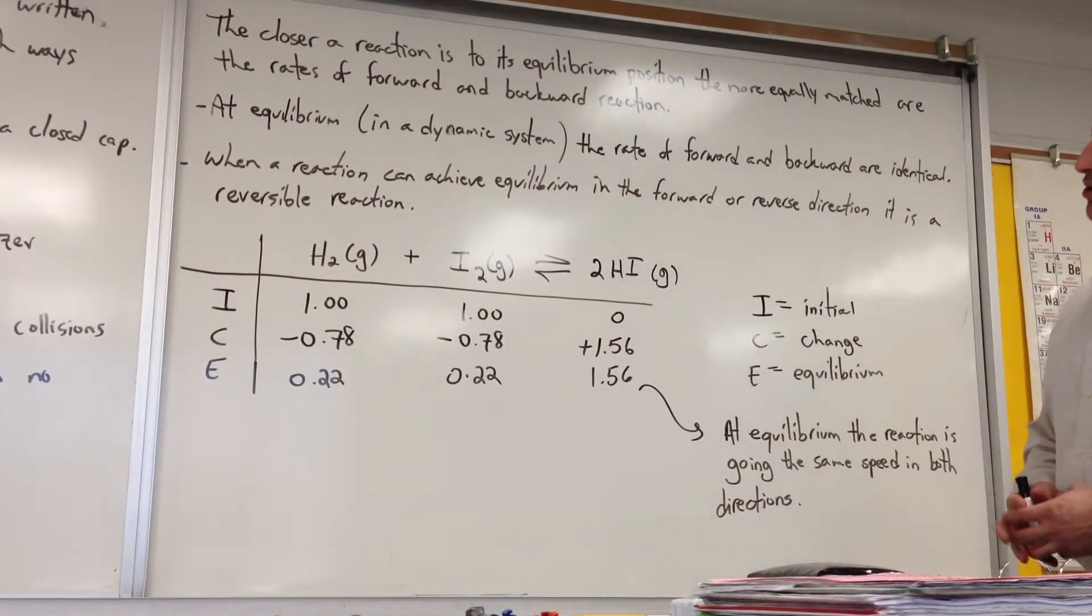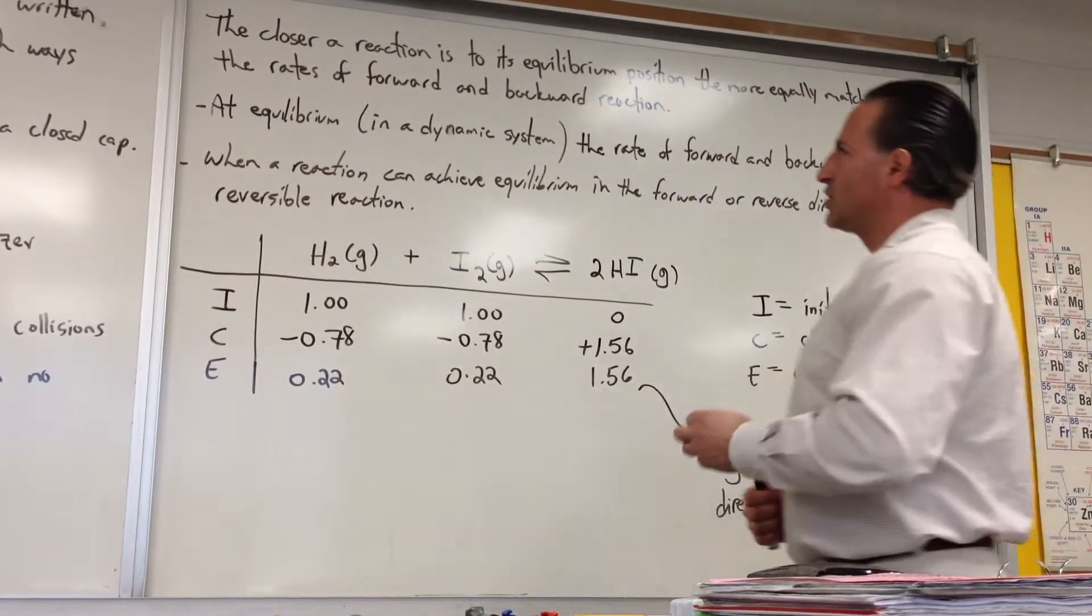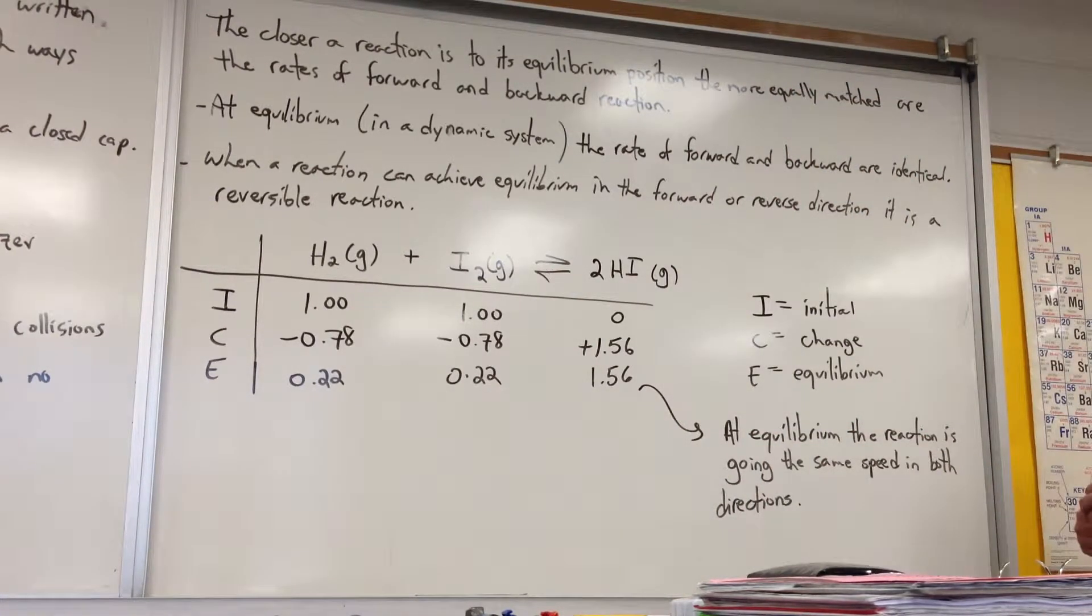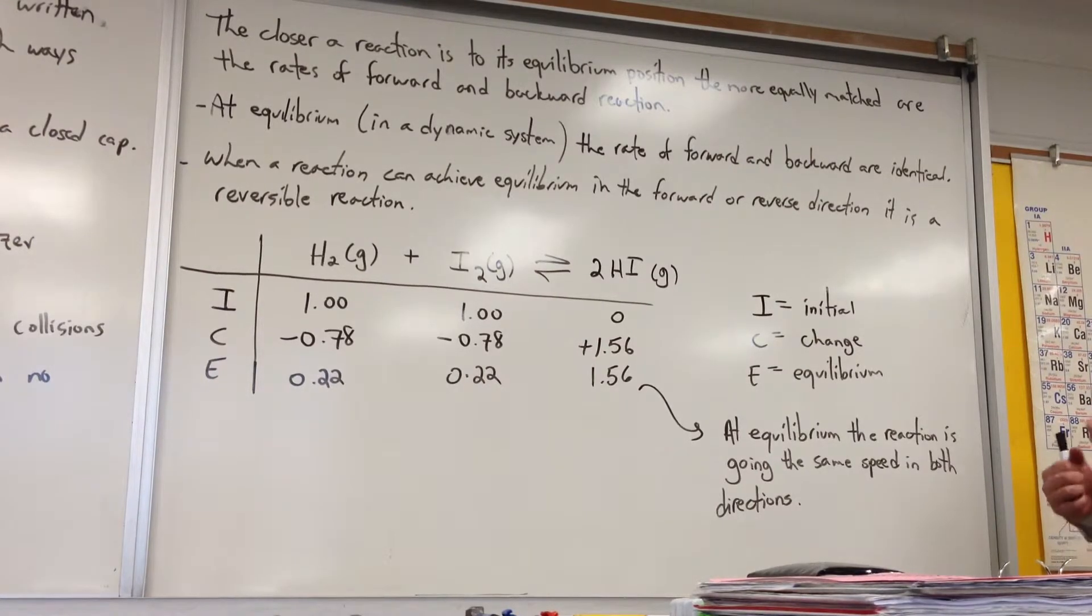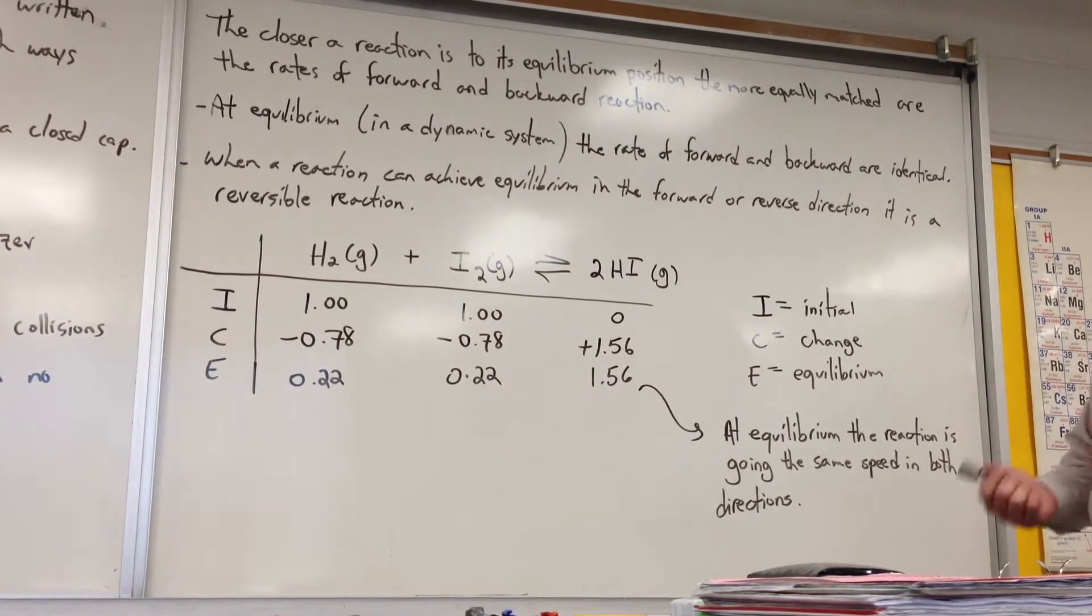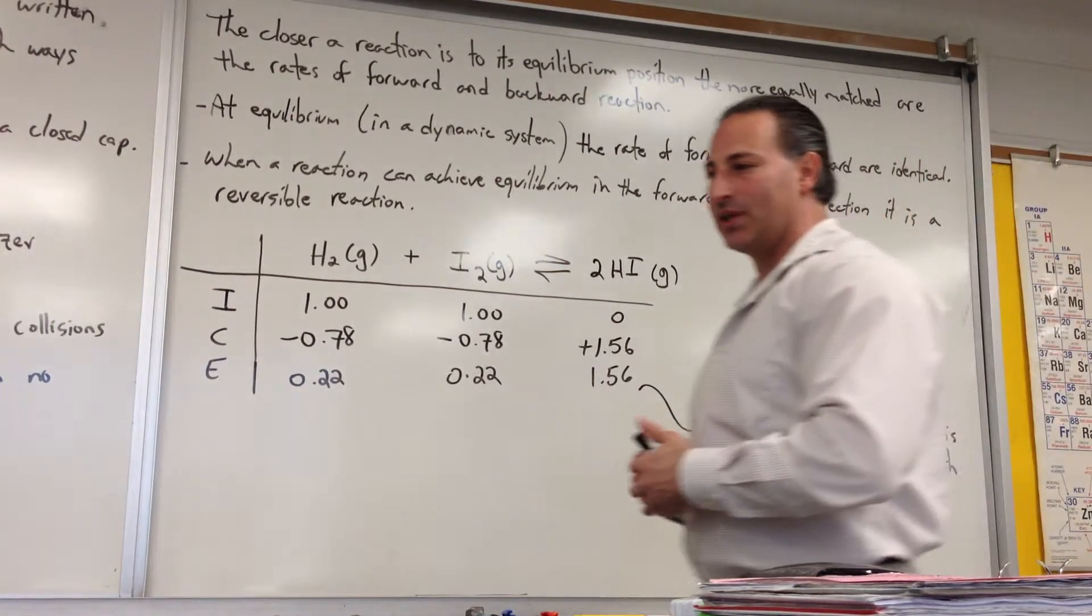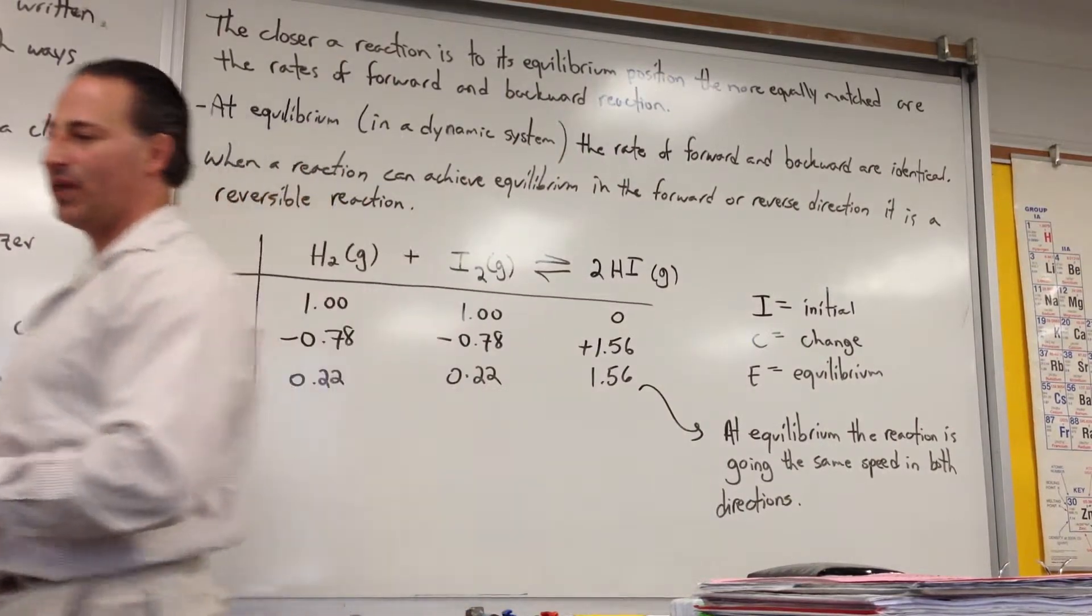One other thing we should take note of is the fact that when the closer a reaction is to its equilibrium position, the more equally matched are the rates of forward and backward reaction. That's why it begins to establish an equilibrium. When the forward rate equals the reverse reaction rate, the reaction stops changing. Although there is microscopically a change occurring, we can't detect it.